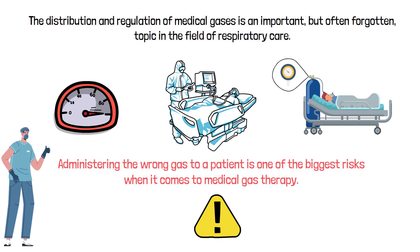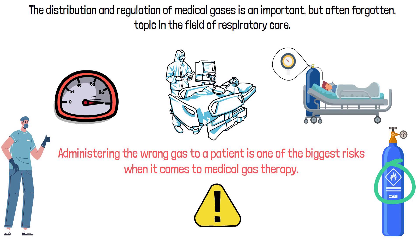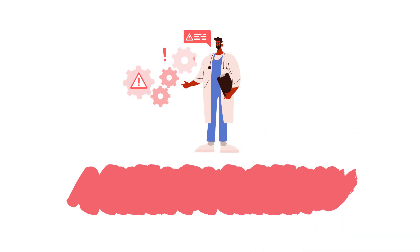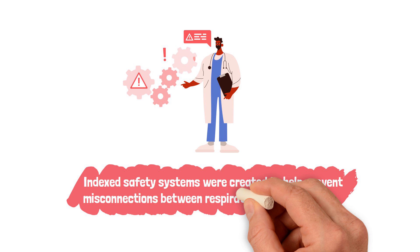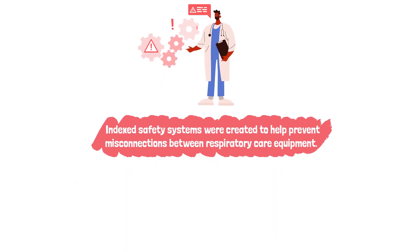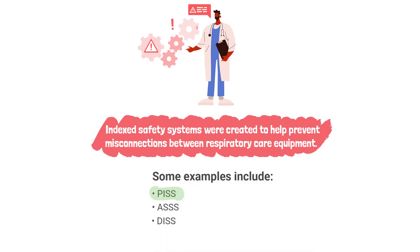This is why, as a respiratory therapist, you are required to read the cylinder or outlet label before administering the gas. Human error does occur, which is why indexed safety systems were created to help prevent misconnections between respiratory care equipment. Some examples include PISS, ASSS, and DISS. For this video, we're focusing on PISS.